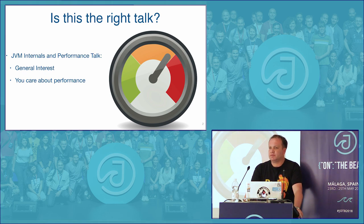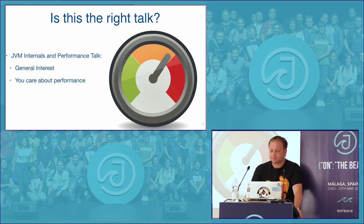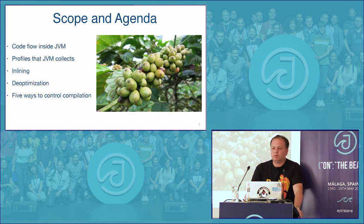I understand that some of you come from the .NET world more than the Java world. For the most part, this talk will be generic enough to be applicable to .NET as well. But towards the end, there will be more examples and some APIs specific to Java and JVMs. First, I'll give a big-picture overview — for some of you this is known, but I want everyone on the same page.